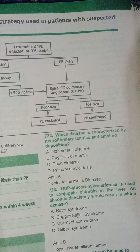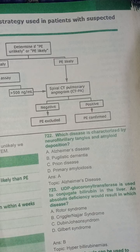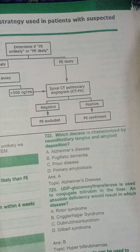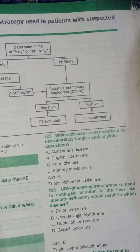Absolute deficiency of glucuronyl transferase would result in which disease? Options are: Rotor syndrome, Crigler-Najjar syndrome, Dubin-Johnson syndrome, or Gilbert syndrome. Absolute deficiency corresponds to Crigler-Najjar syndrome.